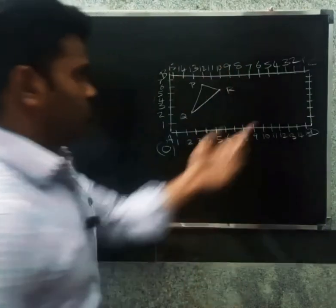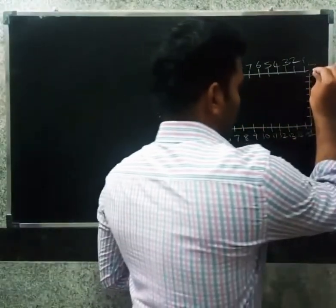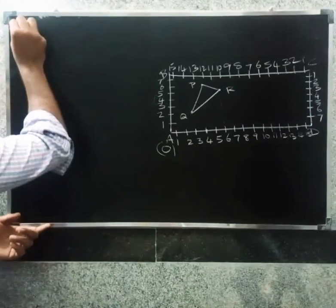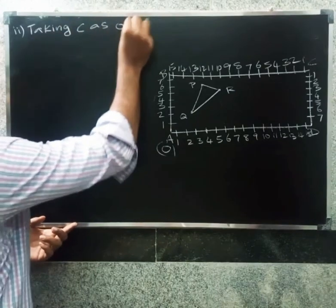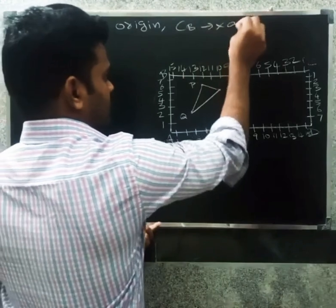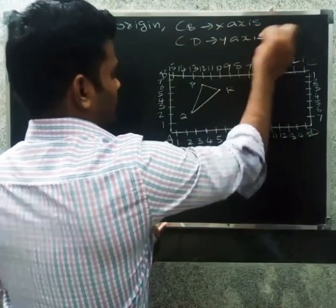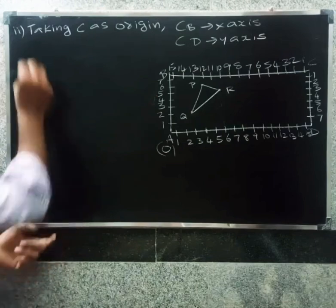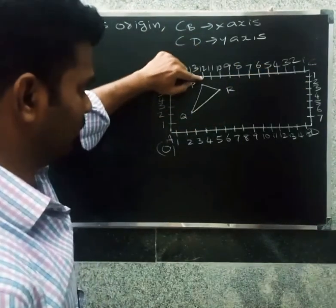Now we have the x-axis with CB along it and CD along the y-axis. Taking C as the origin, CB is the x-axis and CD is the y-axis. Now finding the coordinates of P, Q, and R. For point P, going along the x-axis it is 12, and along the y-axis it is 2.